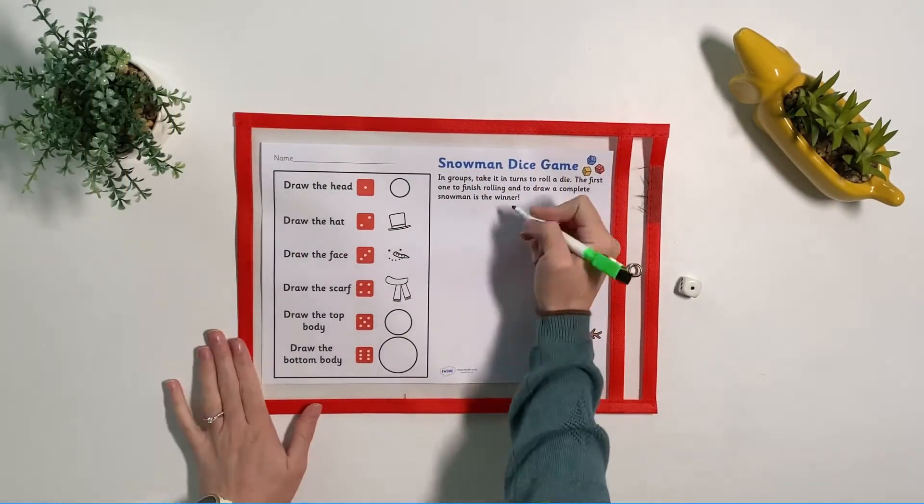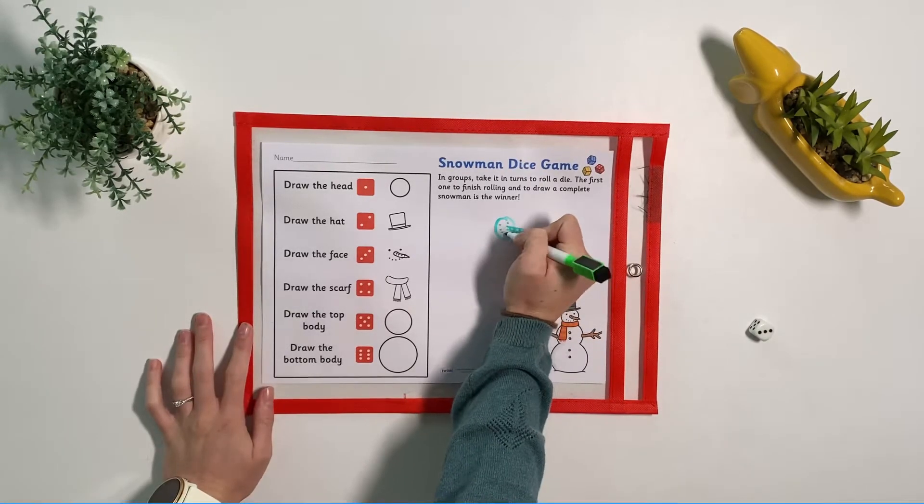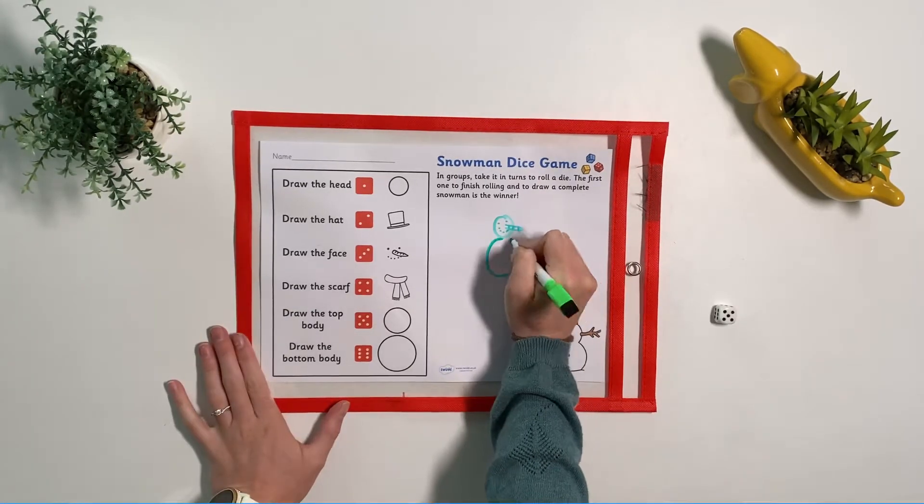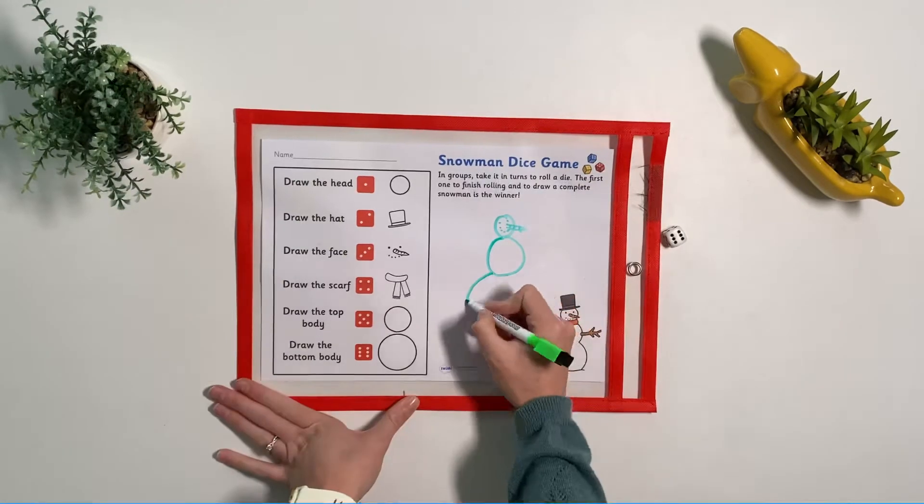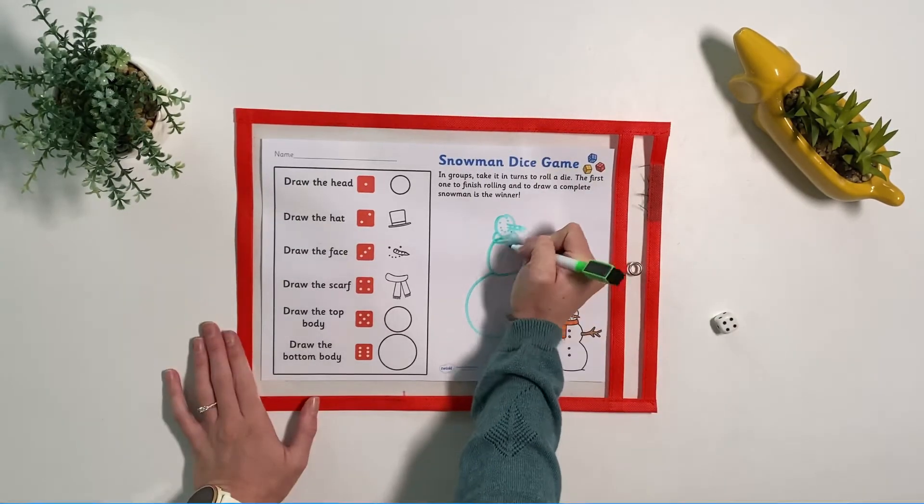This snowman dice game encourages children to use mathematical skills. Children will take it in turns to roll a die and draw part of the snowman. The first one to finish rolling and draw a complete snowman wins.